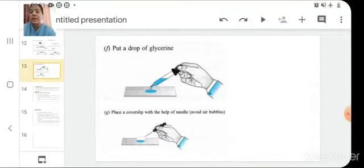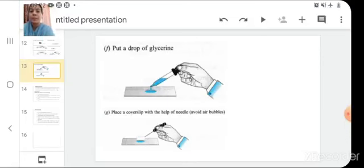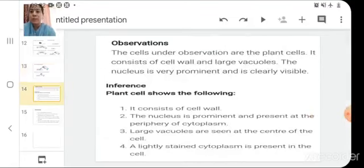So here in this slide you can see the further two more steps. Now come to observations. The cells under observation are the plant cells. It consists of cell wall and large vacuole. The nucleus is very prominent and is clearly visible.